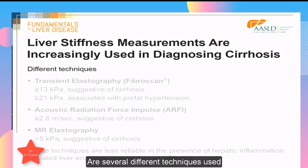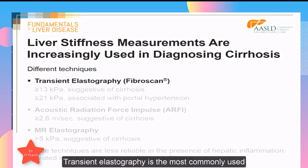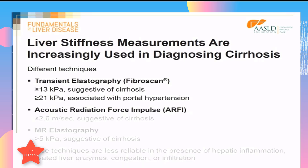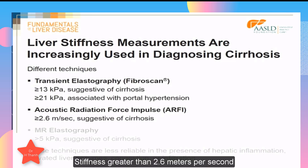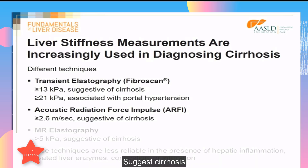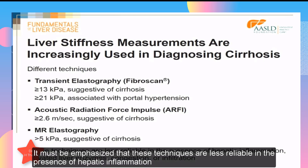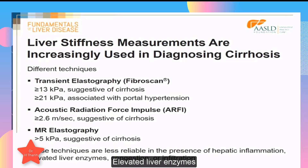Liver stiffness measurements are increasingly being used to diagnose cirrhosis. Transient elastography is the most commonly used, and a liver stiffness greater than 13 kilopascals is suggestive of cirrhosis. If acoustic radiation force impulse is the tool used, a stiffness greater than 2.6 meters per second suggests cirrhosis. On MR elastography, stiffness greater than 5 kilopascals is suggestive of cirrhosis. These techniques are less reliable in the presence of hepatic inflammation, elevated liver enzymes, hepatic congestion, or infiltration.